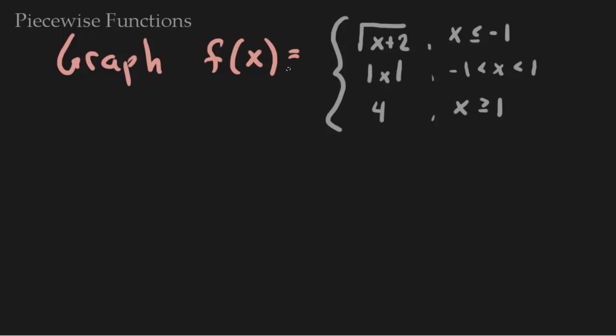Our next example is to graph f of x defined by the following three pieces: the square root of x plus 2 when x is less than or equal to negative 1; the absolute value of x when x is between negative 1 and 1; and y equals 4 when x is greater than or equal to 1.